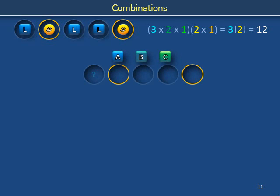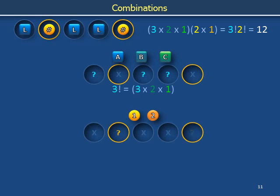How many ways can we arrange three letters into the three slots with blue question marks? There are 3 factorial, or 3 times 2 times 1, or 6 ways. How many ways can we arrange two numbers into the two slots with golden question marks? There are 2 factorial, or 2 times 1, or 2 ways.